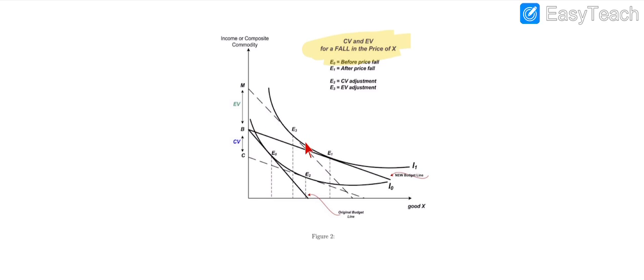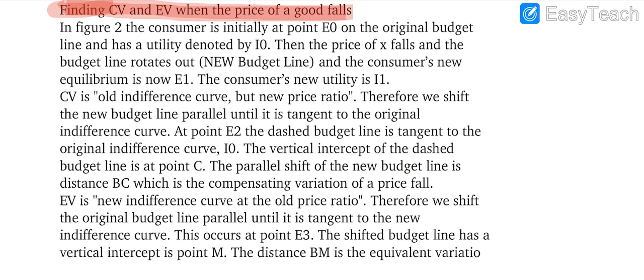EV is at the new indifference curve. E3 is at the new indifference curve, and this distance from B to M is representing the equivalent variation. The diagram explanation is also given here; you can understand by reading this explanation.